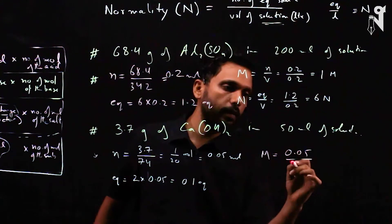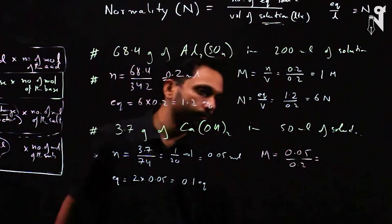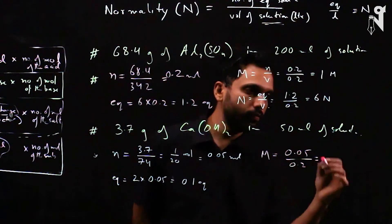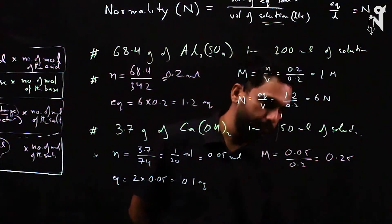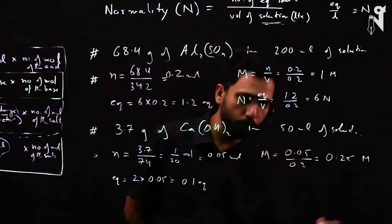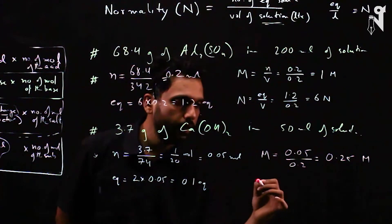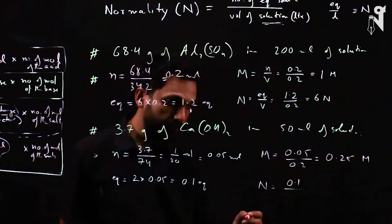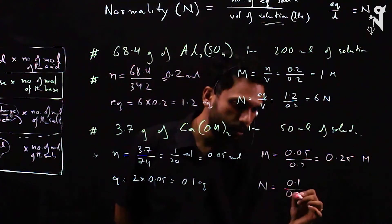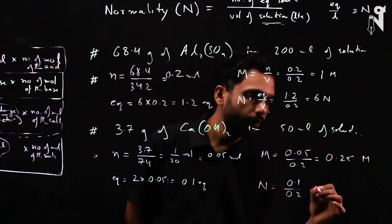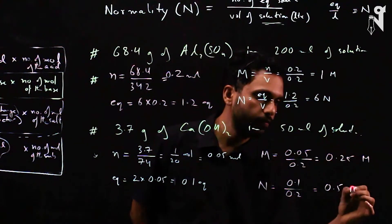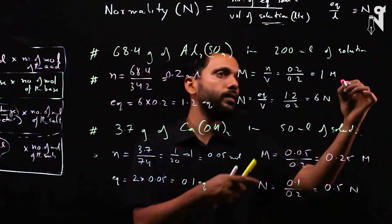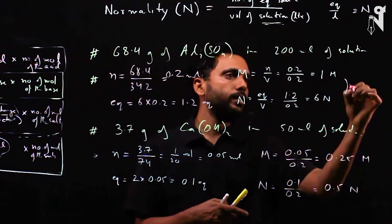Molarity = 0.05 ÷ 0.2 liters (50 ml) = 0.25 molar. Normality = 0.1 ÷ 0.2 = 0.5 normal. So normality is double the molarity in this case.